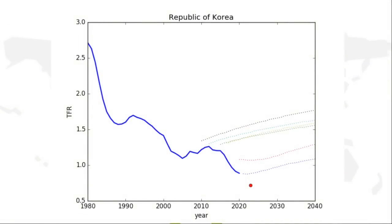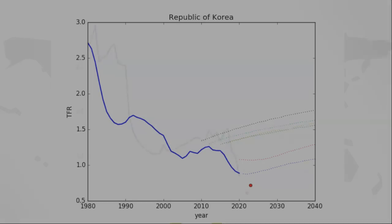Same story in Korea, which is really low. The latest data point, the red point is at 0.72. That's the lowest of all the countries. And the projections say it should be recovering, but in fact, it keeps falling.